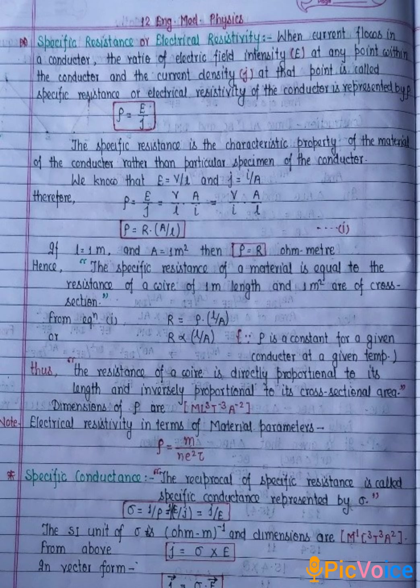From equation first, R is equal to rho into L by A. Here, rho is a constant for a given conductor at a given temperature. Then we can say that R is proportional to L by A. Thus, the resistance of a wire is directly proportional to its length and inversely proportional to its cross-sectional area.